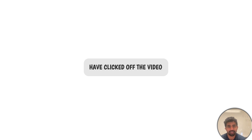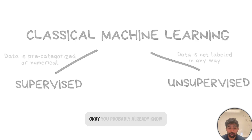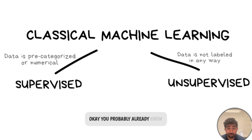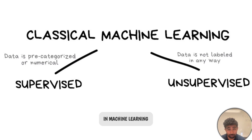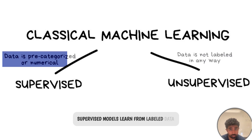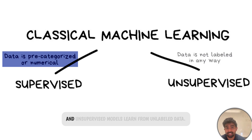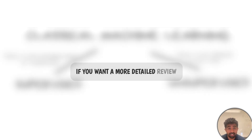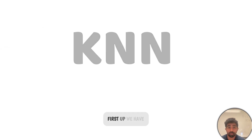Now that all the NPCs have clicked off the video, let's get started. You probably already know about the two broad categories in machine learning, so let's not spend much time on that. Supervised models learn from labeled data and unsupervised models learn from unlabeled data. If you want a more detailed review, go to the relevant time code — otherwise, let's move on.